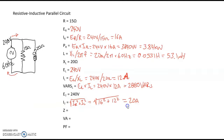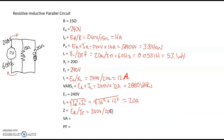Notice 20 amps does not equal 12 amps plus 16 amps. 16 amps flows through the resistor and 12 amps through the inductor, but we cannot simply add them because they are out of phase. For total impedance, I'll use total voltage divided by total current: 240 volts divided by 20 amps equals 12 ohms of total impedance.